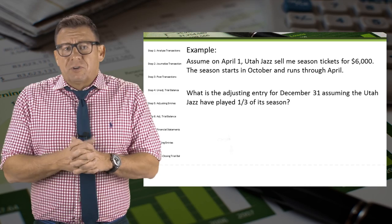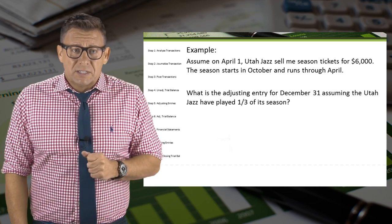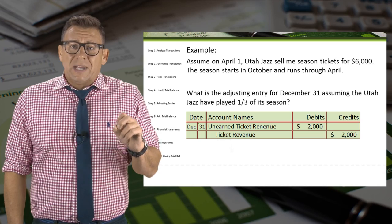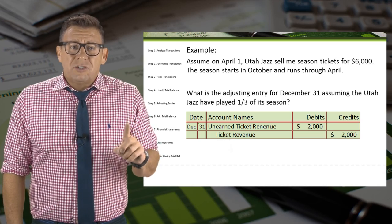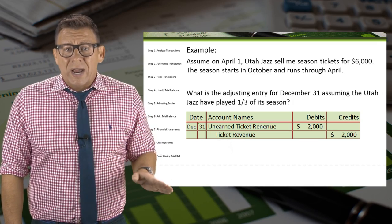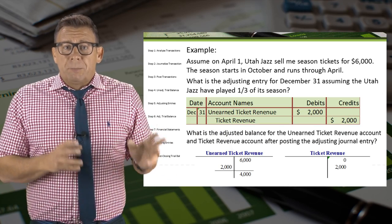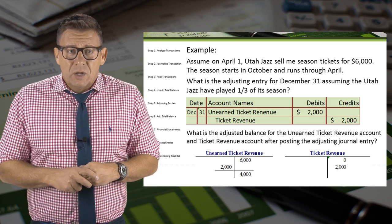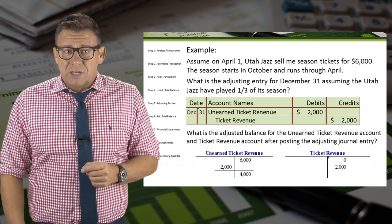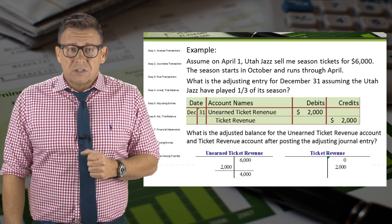What is the adjusting entry for December 31, assuming the Utah Jazz have played one-third of its season? Since $2,000 of the unearned ticket revenue has now been earned, we need to debit the liability account unearned ticket revenue and credit the revenue account ticket revenue for $2,000. After posting this adjusting entry, the balance remaining in the unearned ticket revenue account is now $4,000 and the ticket revenue has been recorded to show $2,000 of earned revenue.